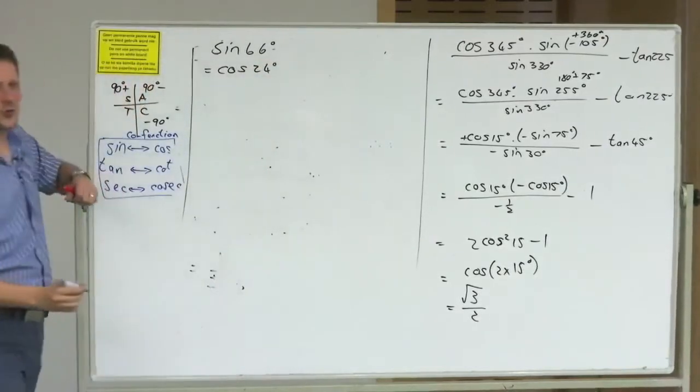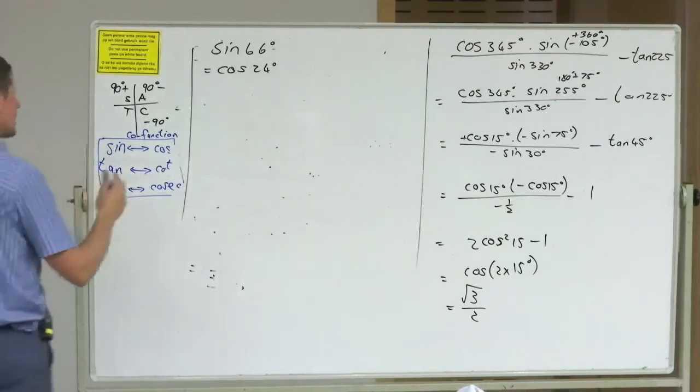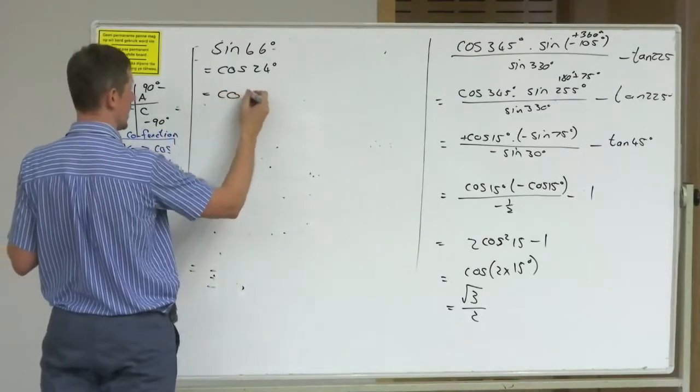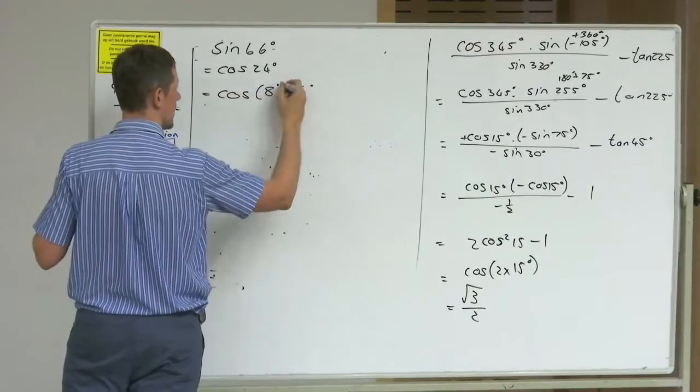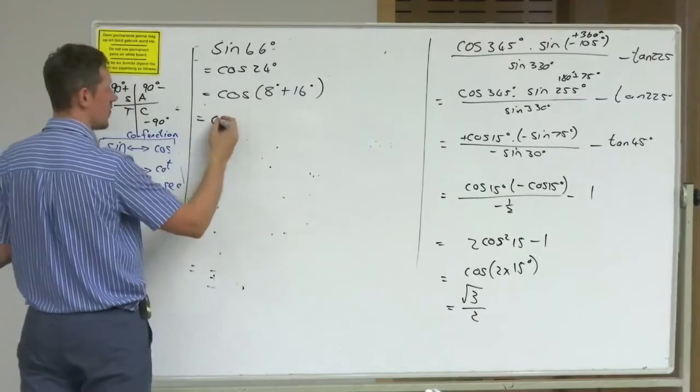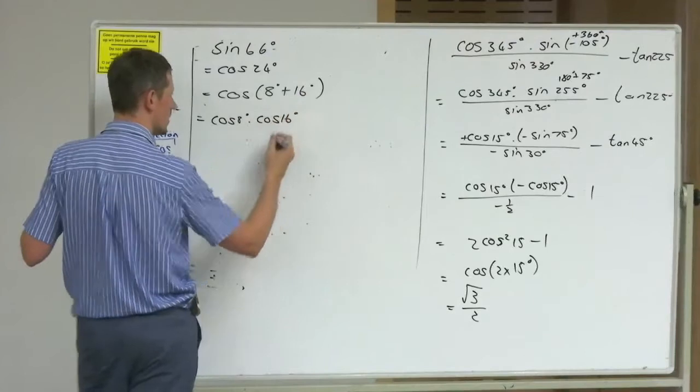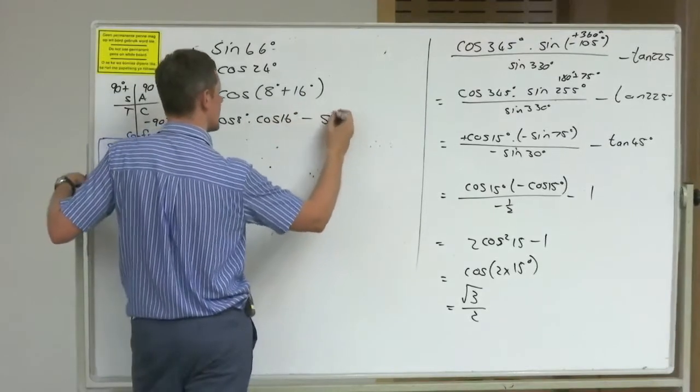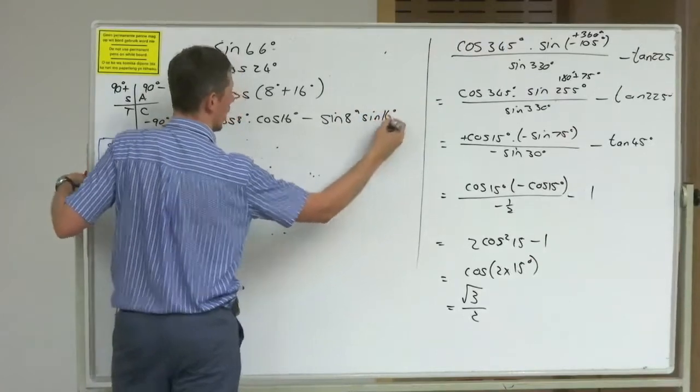Ooh! Cos of 24, now 8 and 16, that goes to 24. So I'm going to try and say, okay, I don't have any other choice except to expand. So this is going to give me cos of 8 degrees times by cos of 16 minus sin of 8 degrees sin of 16.